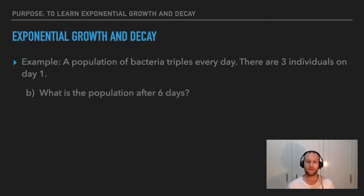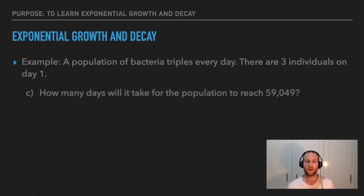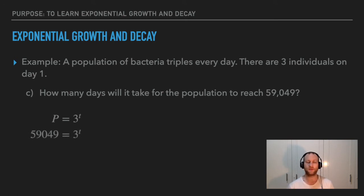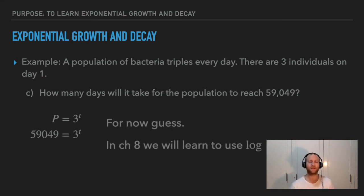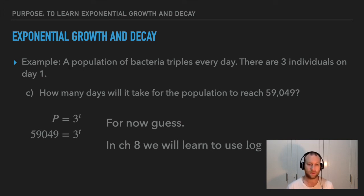To find the population after six days, plug t equals six into P equals three to the power of t. The population is 729. To find how many days it takes to reach 59,049, set 59,049 equals three to the power of t and solve for t. Using logarithms (covered later), t equals ten. Note: shift-solve on a calculator is not allowed — you must show the work.